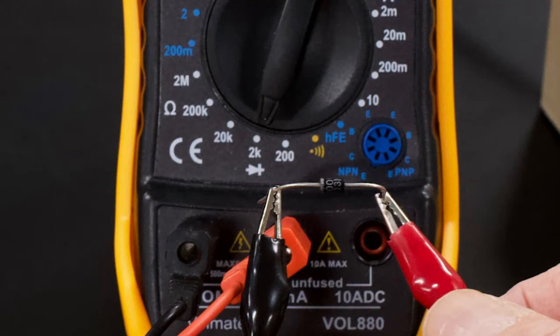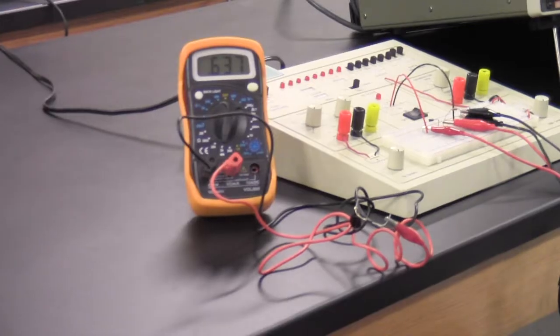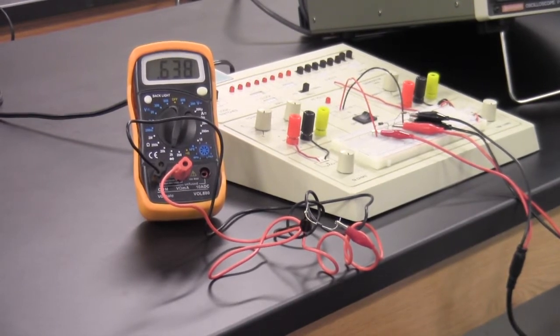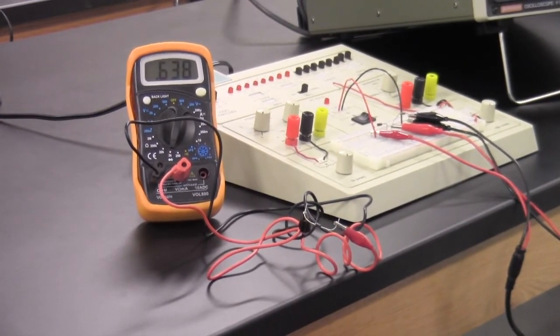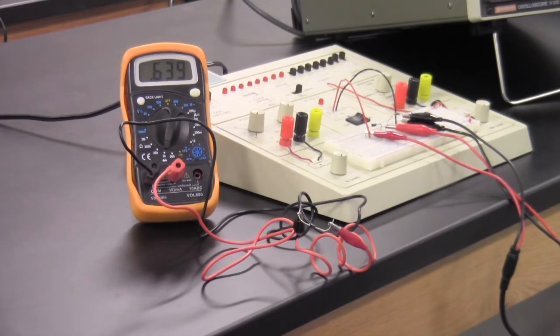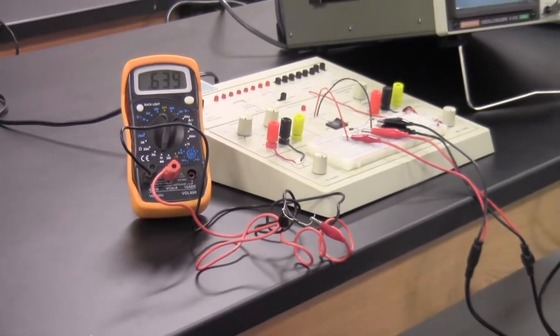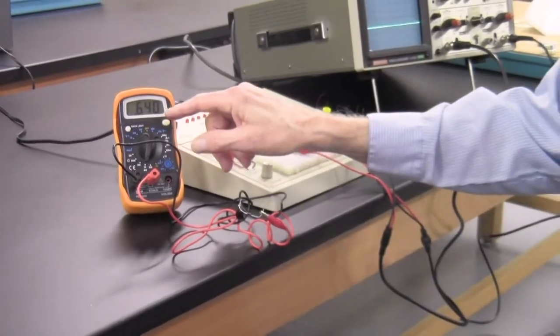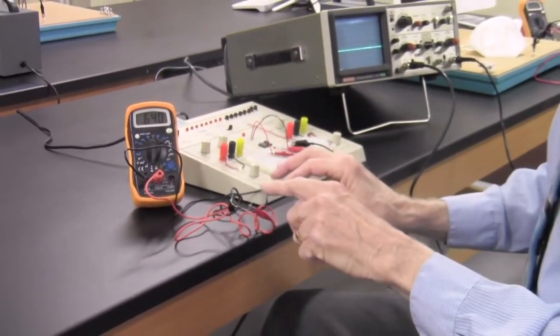You see when I do that, we've got it set at the diode setting, which is the same as a 2 kilohm maximum setting. This is not measuring resistance, it's measuring voltage when it's set on that scale. We see that we have 0.637. That means this is a silicon diode, 0.6 roughly for silicon, 0.3 roughly for germanium. So the junction potential is 0.6 volts roughly, and this is a silicon diode.